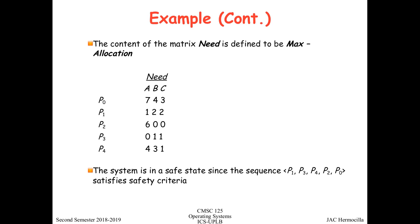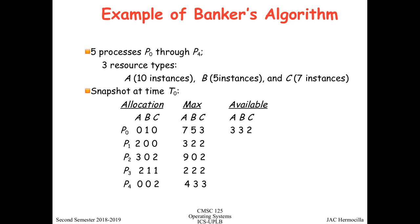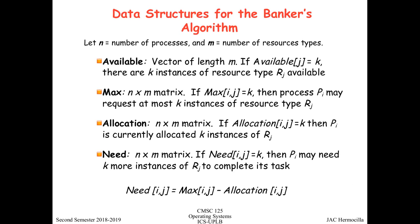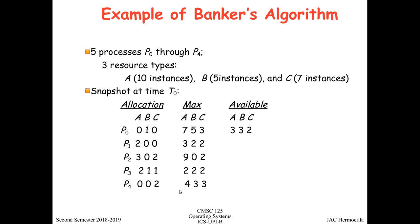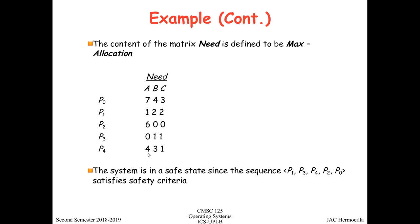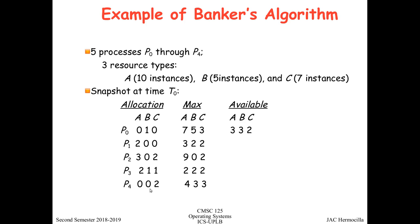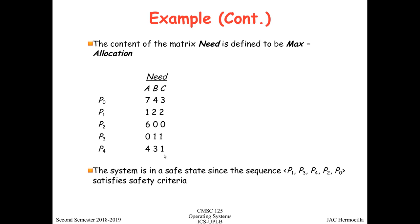The need matrix is defined as max minus allocation. For example, for process P4: for resource A, 4 minus 0 gives 4; for resource B, 3 minus 0 gives 3; for resource C, 3 minus 2 gives 1. Performing this operation for all processes gives the complete need matrix.